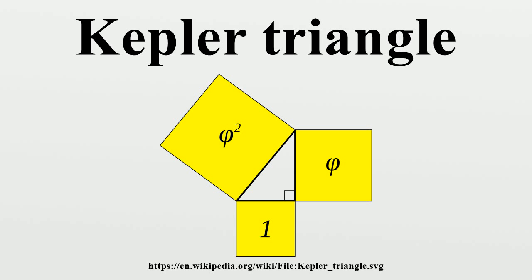The squares of the edges of this triangle are in geometric progression according to the Golden Ratio. Triangles with such ratios are named after the German mathematician and astronomer Johannes Kepler.